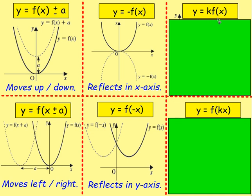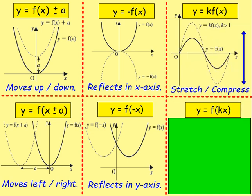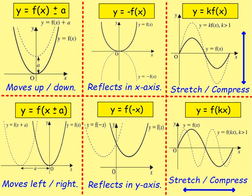If you have y equals k f of x, well, think back to sine x. If you put a number in front of it, 2 sine x, 3 sine x, that will stretch the graph or compress it in your y-axis. So it will stretch or compress it vertically. If you have y equals f of kx, that will also stretch or compress the graph, but this time it will be in the x-axis. So thinking back to sine x, if you put a number in front of the x, so sine 2x or sine 3x, that will compress the graph horizontally.